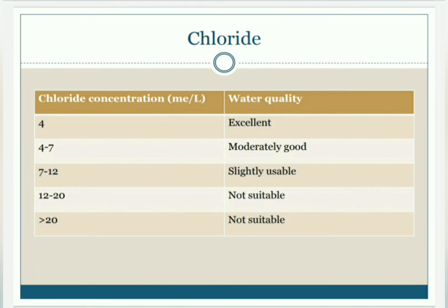Chloride concentration can be used as a factor in regional water classification. Less than 4 mEq per litre indicates excellent water quality, while more than 12 mEq per litre indicates the water is not suitable for irrigation purposes.